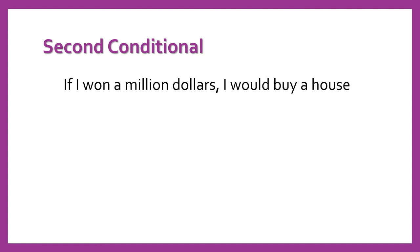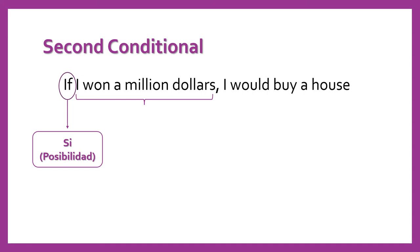So for the second conditional, let's see some examples. 'If I won a million dollars, I would buy a house.' In Spanish: 'Si yo gano un millón de dólares, yo podría comprar una casa.' As we know, we start with the word 'if', which means 'si' — possibility — in Spanish. Next we have the sentence that needs to go in the past simple tense. This is a positive sentence, therefore the verb 'won' goes in past.